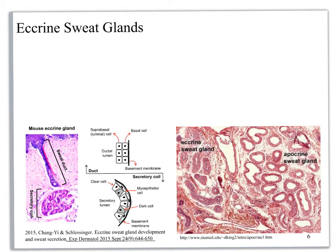We're going to look next at the eccrine sweat gland — call it an eccrine sweat gland. On this photomicrograph, I have eccrine sweat glands over here and apocrine sweat glands over here. On a photomicrograph, I'm okay if you mix up the names or just call them a sweat gland or pseudoriferous gland. Don't call them a merocrine gland.